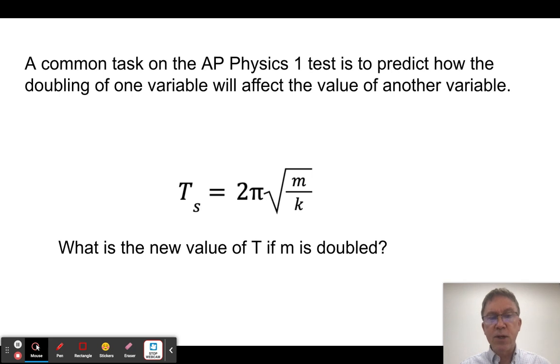One of the question types you're definitely going to get on the AP Physics test more than once is to be told, hey, we've got this relationship here. This turned out to be the equation for the period of spring. And they're going to say, well, what's the new value of T if we double m? Now, these are called proportional reasoning problems, and you're going to get them. So let's just start doing them day one of AP Physics.